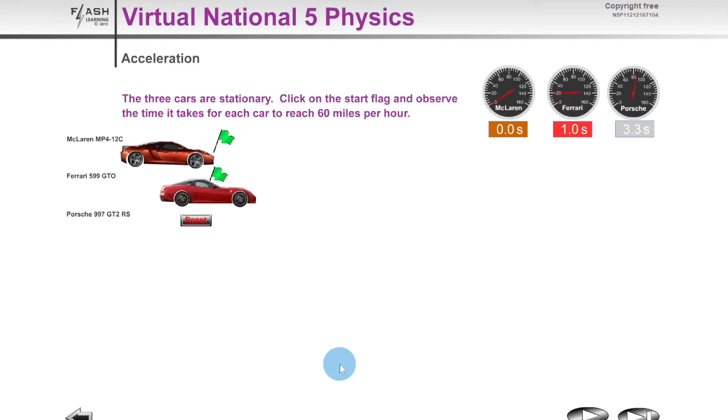Next one, the Ferrari, 3.2 seconds this time and then we've got the McLaren, which is just three seconds it takes to reach 60 miles per hour.